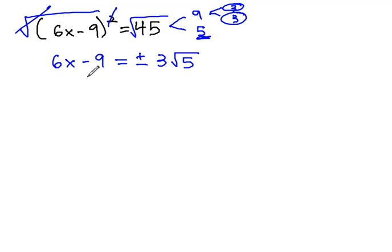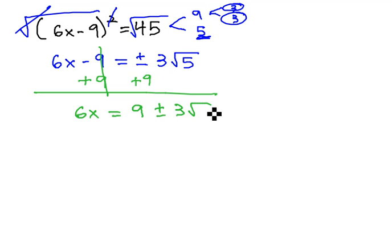And then we can continue solving by adding 9 to both sides. Again, because of that plus or minus, we're just going to write this as an equation, 9 plus or minus 3 root 5. So 6x equals 9 plus or minus 3 root 5.